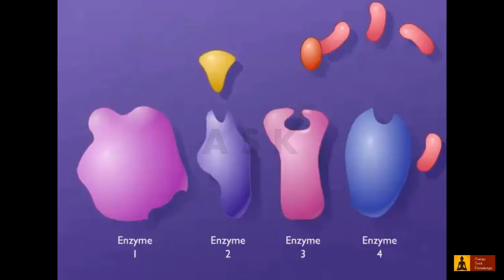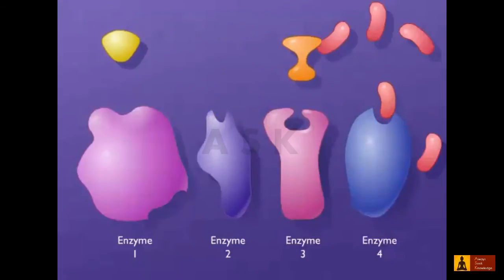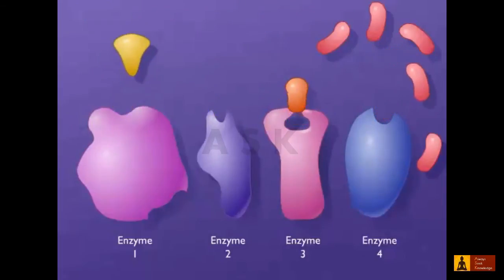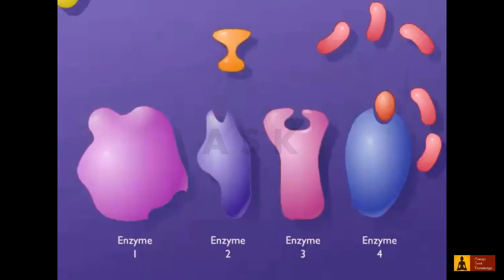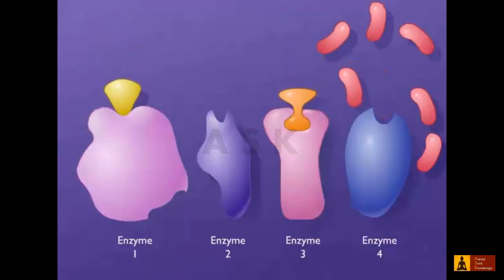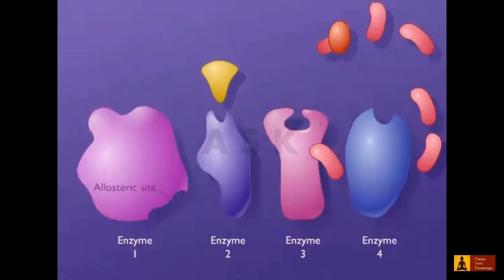In feedback inhibition, the end product of the pathway reacts with the first enzyme that is unique to the pathway. The reaction occurs at a site on the enzyme that is different from the active site, called the allosteric site.